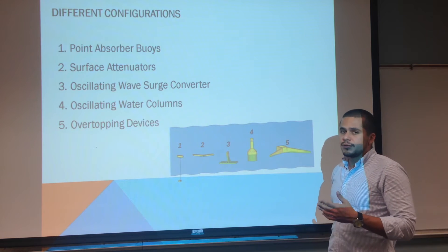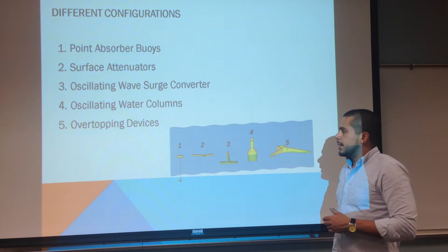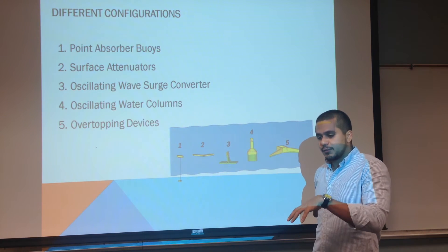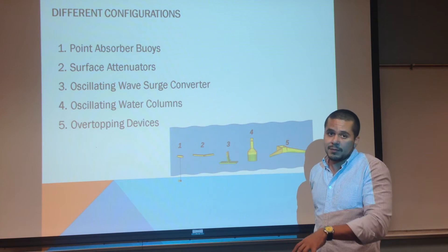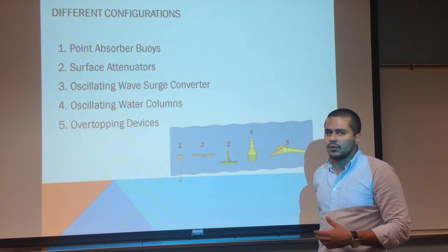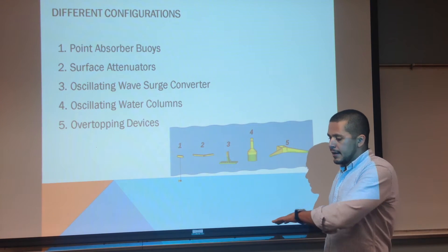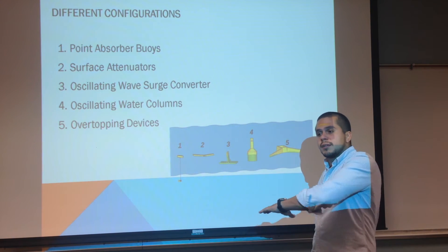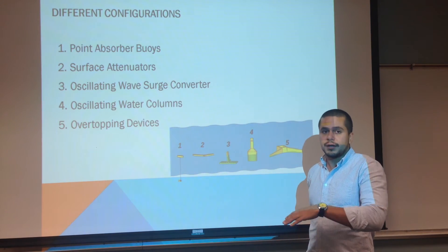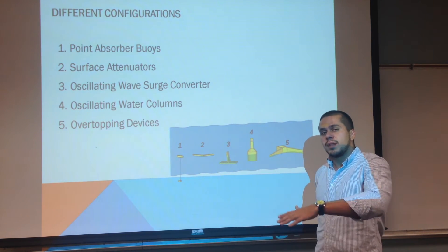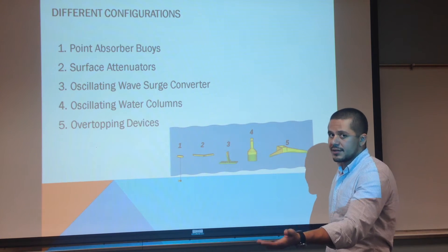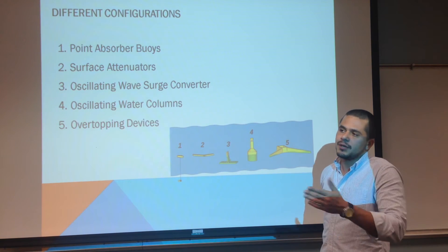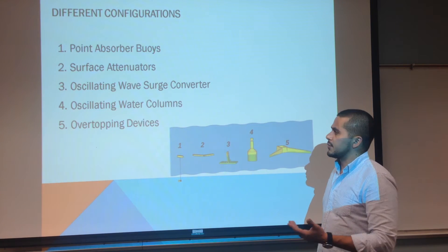Oscillating wave surge converters work on a very similar principle. The difference is that we have a fixed part of the device, which is fixed to the bottom of the sea through the use of columns or a solid base, and it has several devices attached on the surroundings. These devices float on the surface of the water, and the relative movement of these devices with the platform creates hydraulic power, which is later transformed into electrical energy.